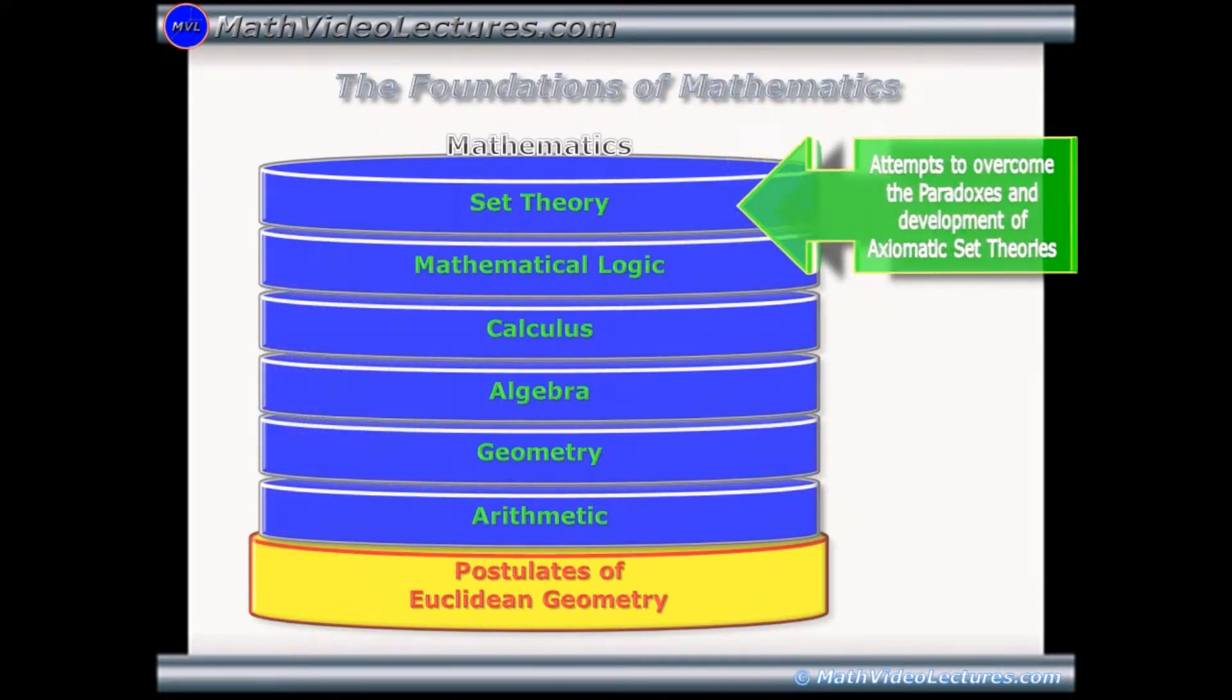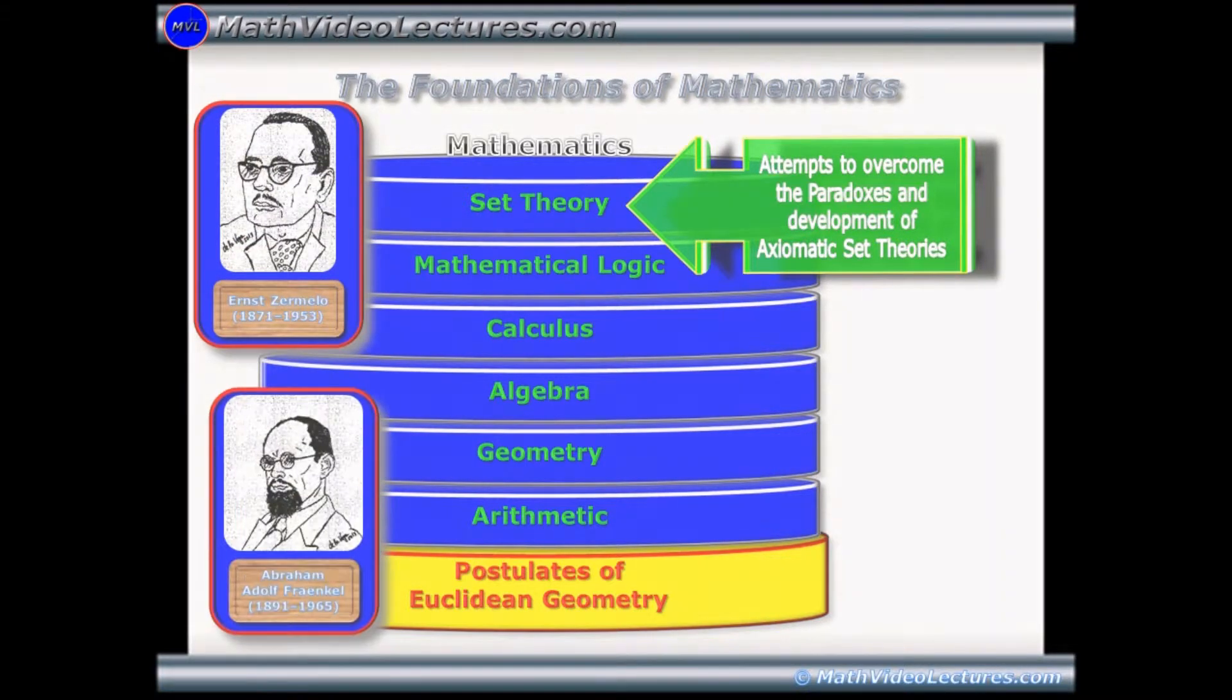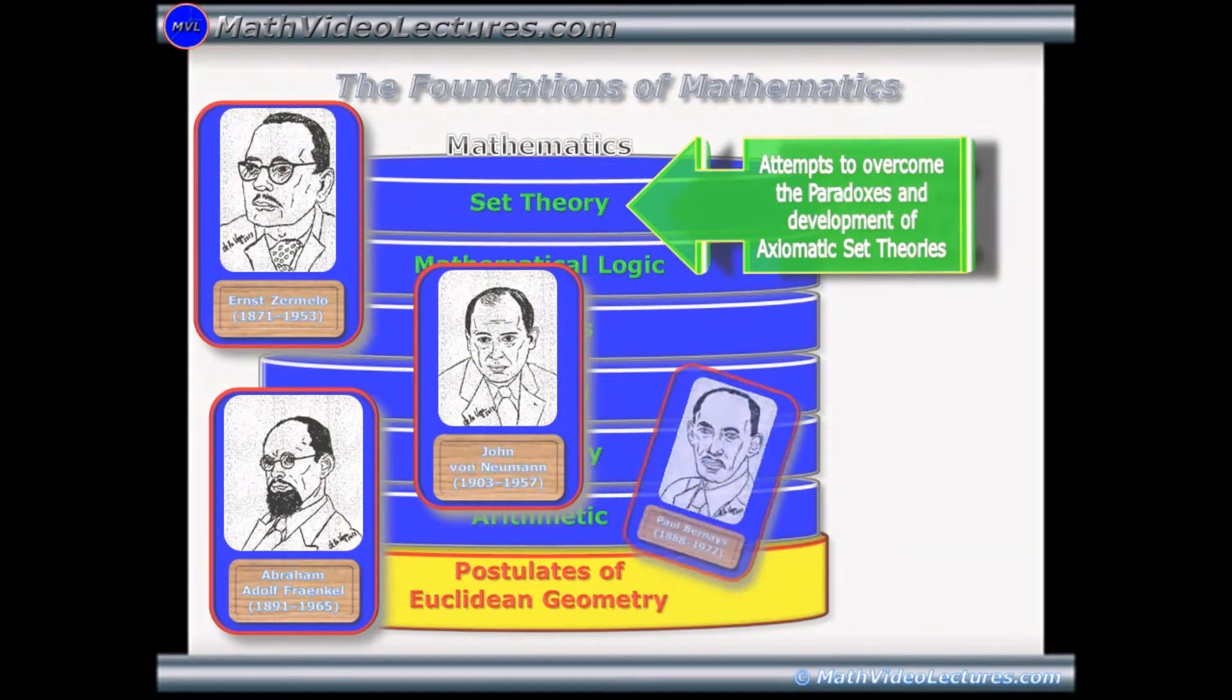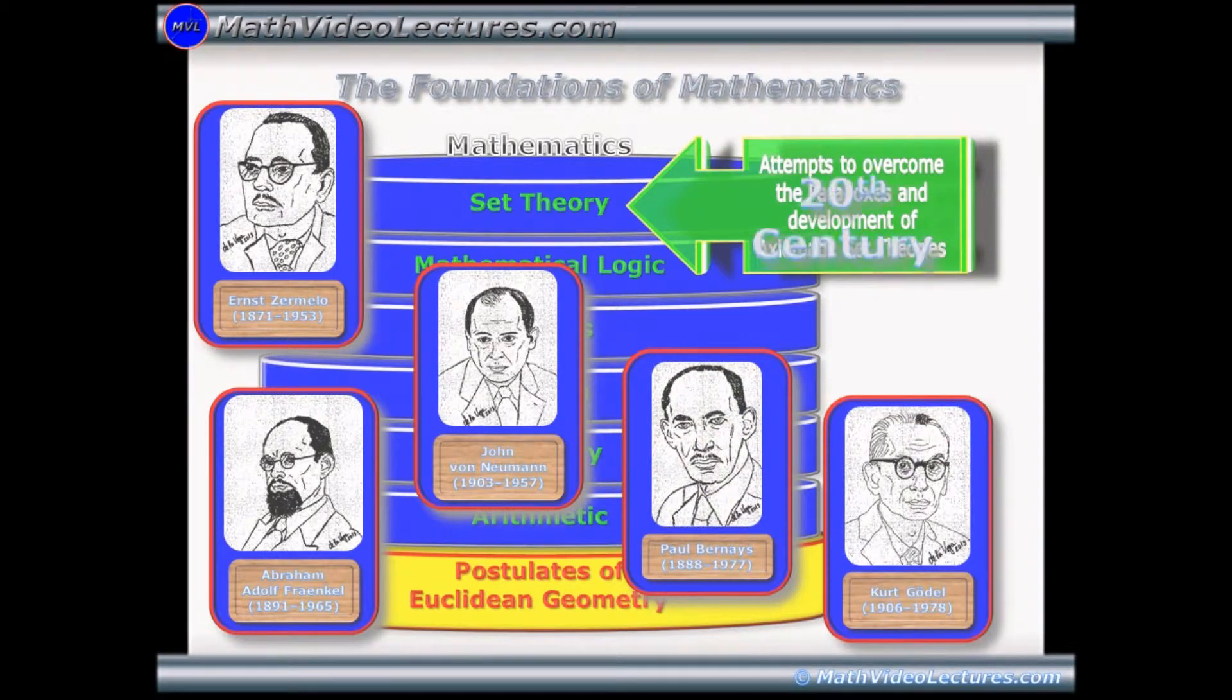And the attempts to overcome these paradoxes and the development of axiomatic set theories by Ernst Zermelo, Adolf Fraenkel, John von Neumann, Paul Bernays, Kurt Gödel, and others during the 20th century.